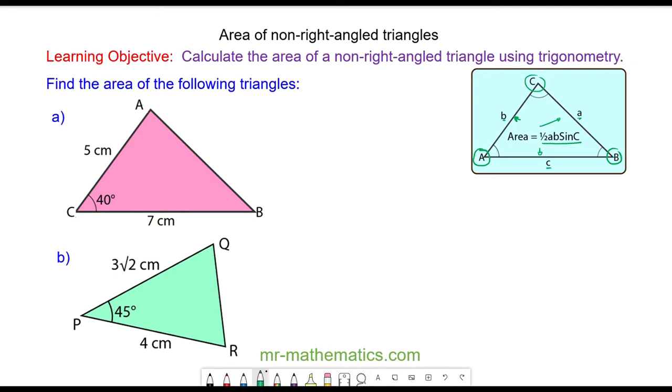We can use this formula: area equals one half AB sine C. And we know in this triangle the side opposite angle A we call lowercase a, the side opposite angle C we call lowercase c, and the side opposite angle B we call lowercase b.